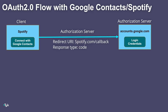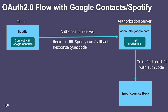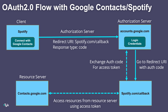After authenticating, I'm prompted to consent to allowing Spotify to see, edit, or delete my Google contacts on my behalf. Once I've consented, I'm sent to the redirect URI at spotify.com/callback along with an authorization code as specified in my response type. The client can't do anything with this code directly, but it uses it to go back to the authorization server to exchange it for an access token. That access token is what the client needs to access the resource server and retrieve my Google contacts information. Spotify can then go to the resource server at contacts.google.com and access my contacts using that access token.